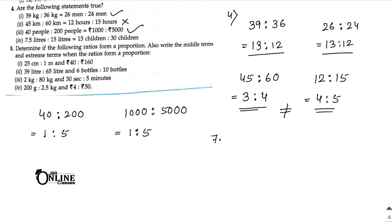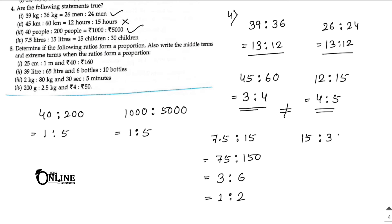Last statement: 7.5 is to 15. To remove the decimal, multiply both by 10: gives 75 and 150. Divide by 25: 25 × 3 = 75 and 25 × 6 = 150, giving 1 is to 2. And here 15 children is to 30 — divide by 15 — also gives 1 is to 2. Both are equal, so this is true.